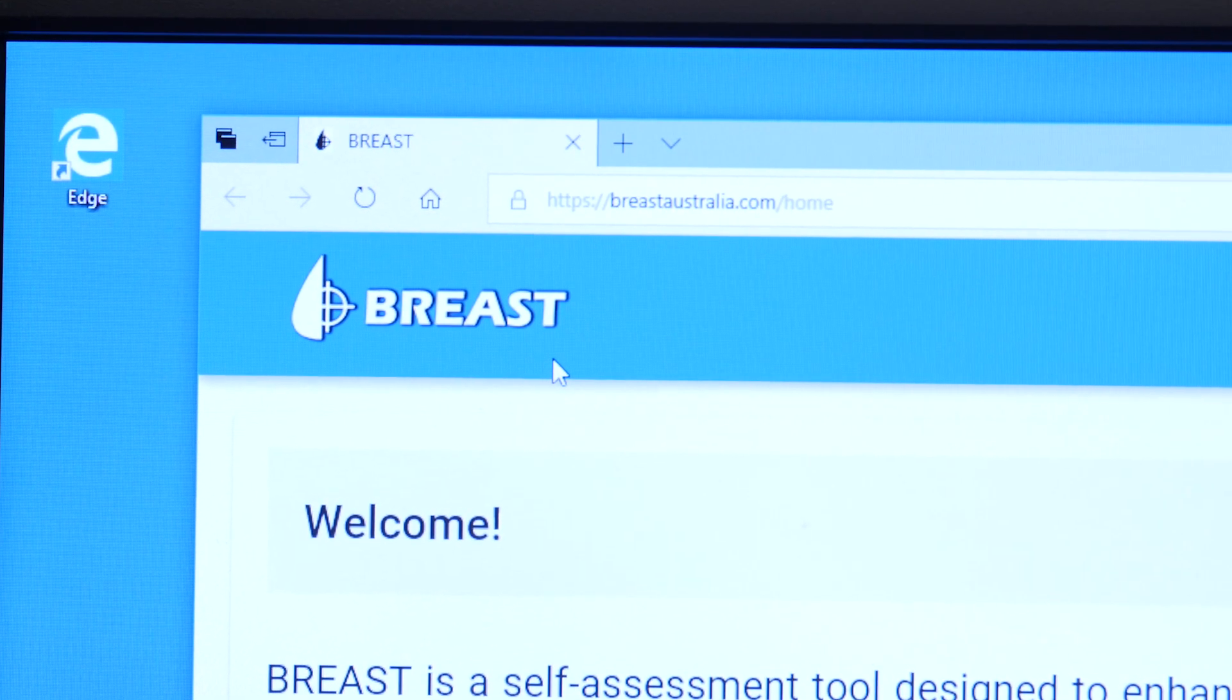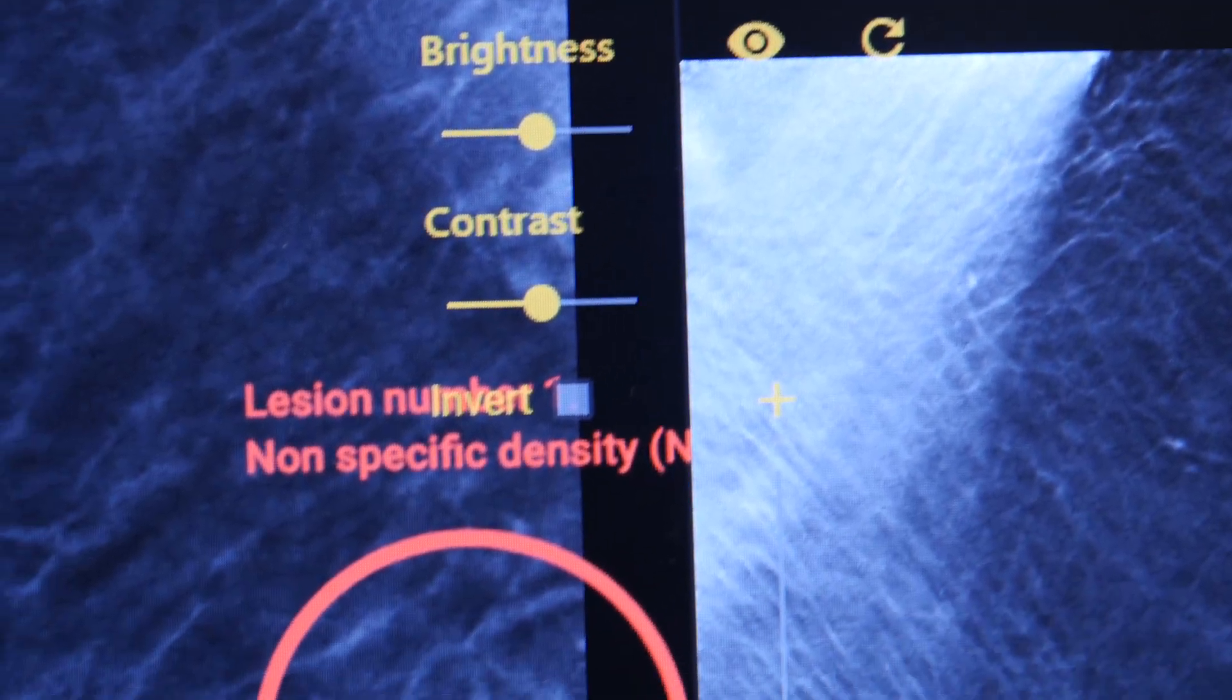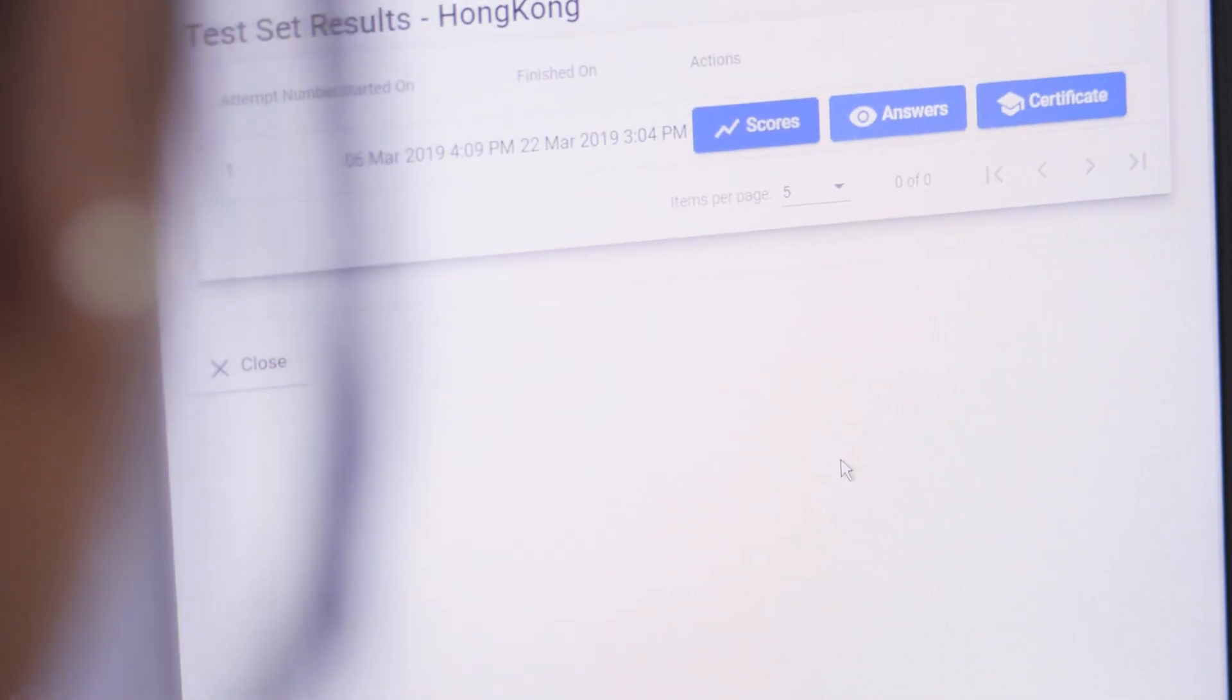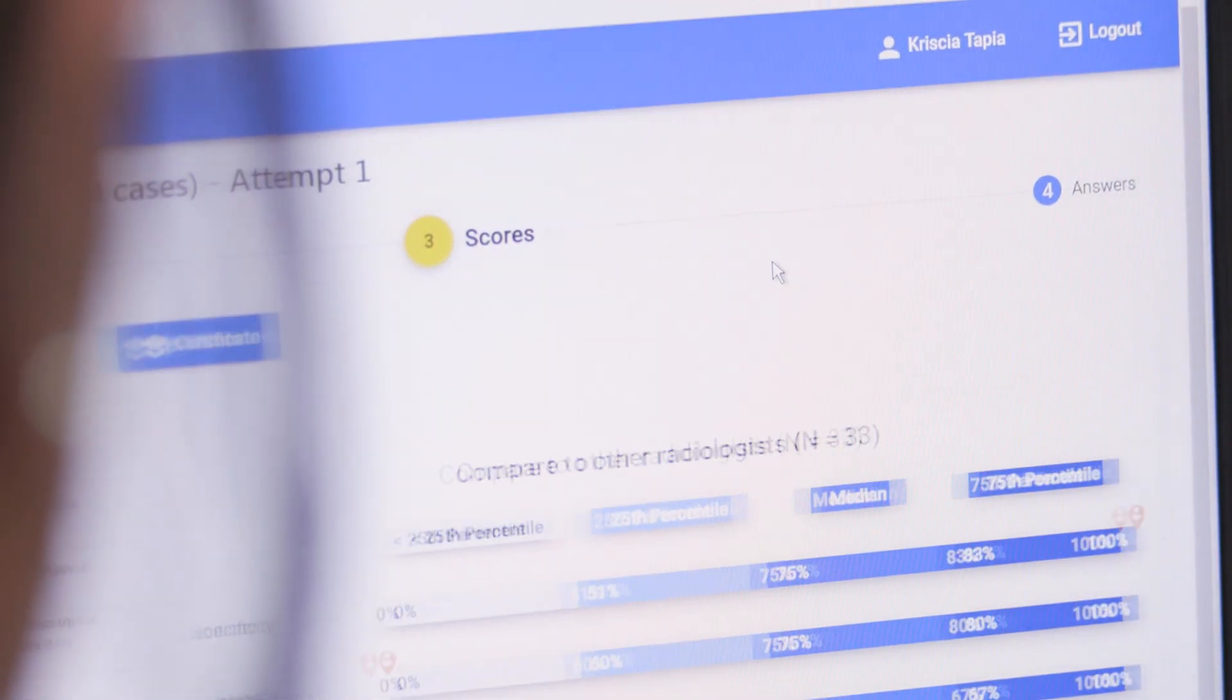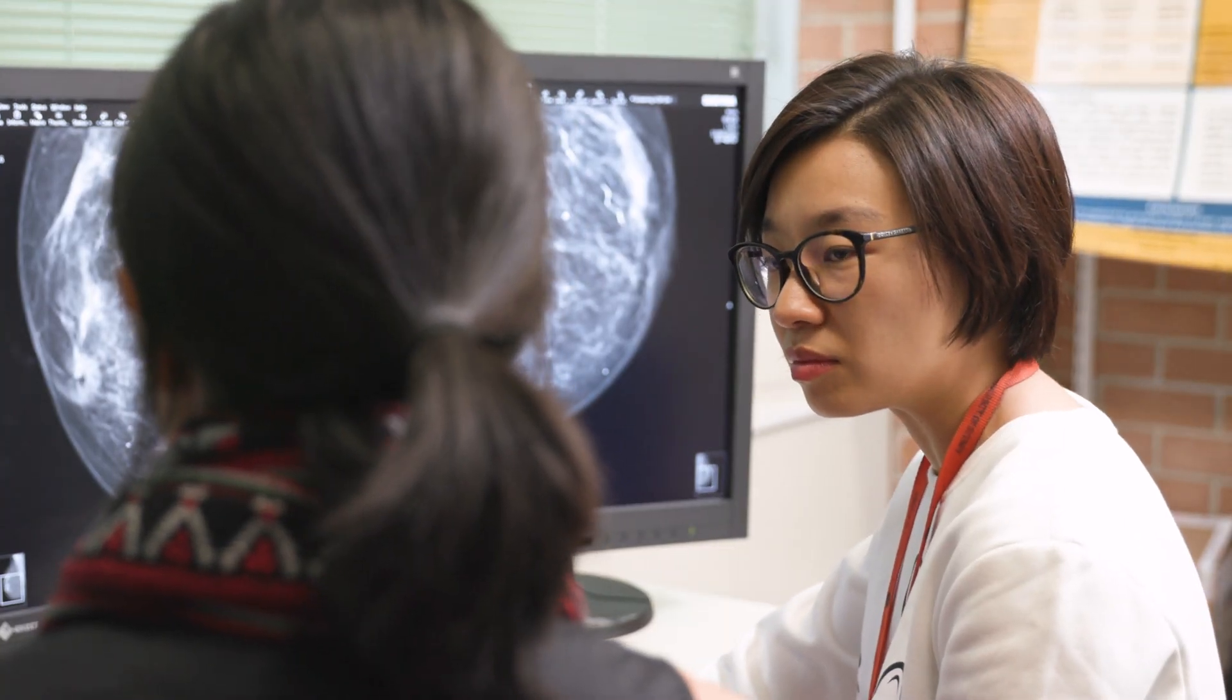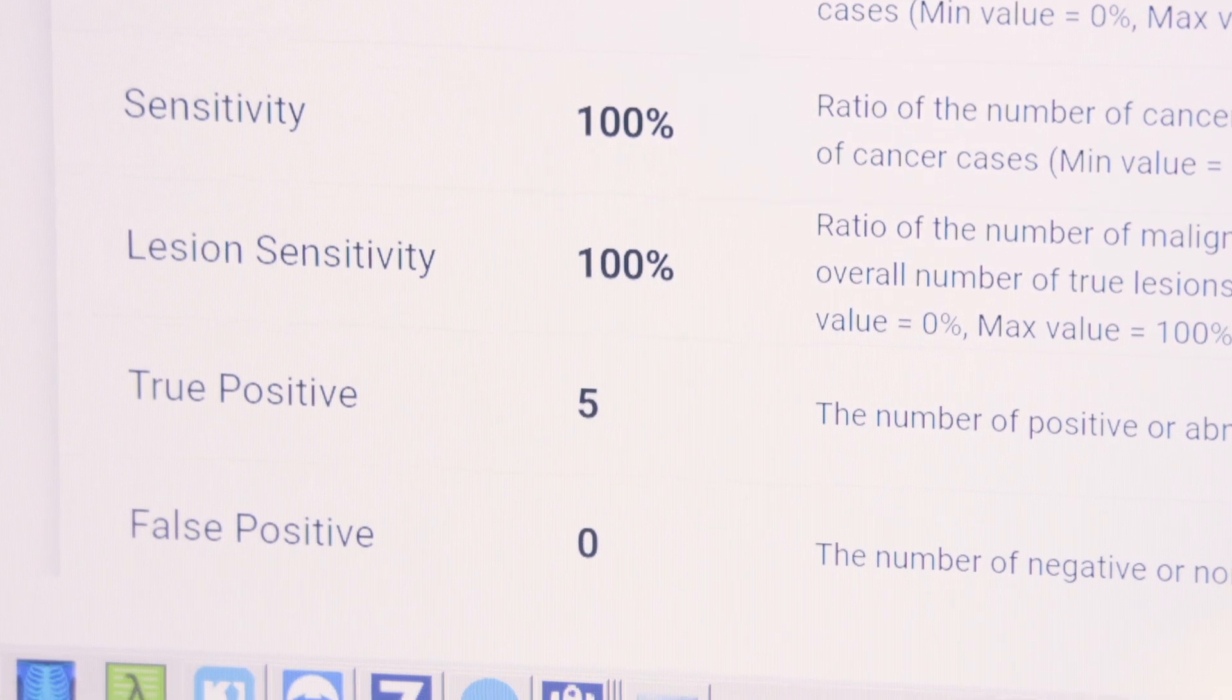So the tool that was needed was something that could immediately alert the radiologist when they've identified a cancer incorrectly, and then they can go back and view those cases and have a learning experience and be able to recognize what their errors are and how to avoid them in a clinical setting.